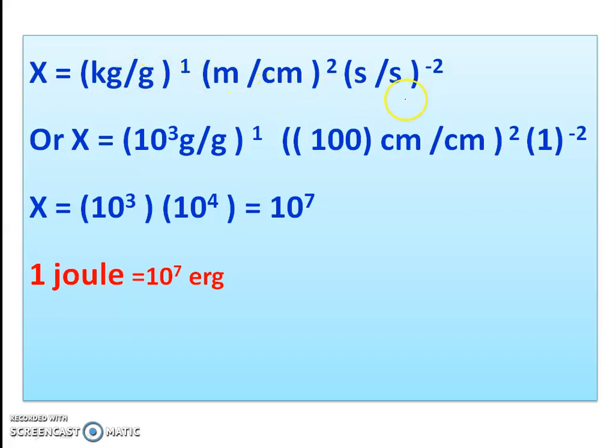We can find out x. One Joule in SI to CGS, kilogram is 1000 grams, 10 to the power 3. Meter is 100 centimeters. Seconds cancel with seconds to the power minus 2. Gram cancels with gram, centimeter cancels with centimeter. The answer is 10 to the power 3 and 10 to the power 2.